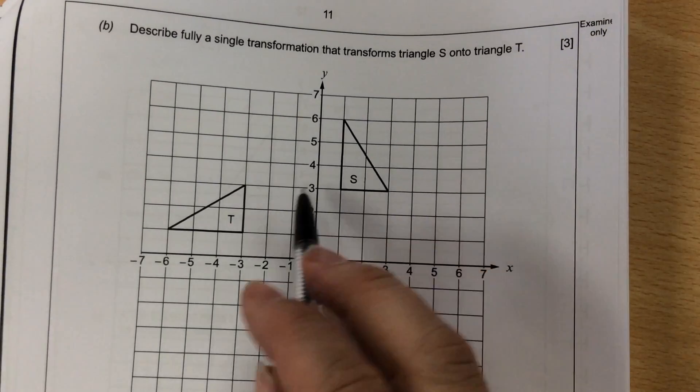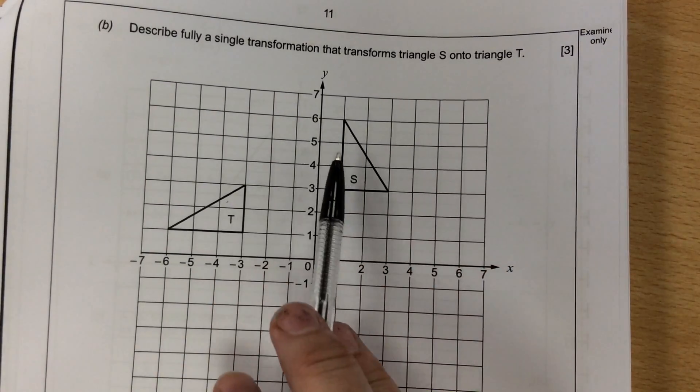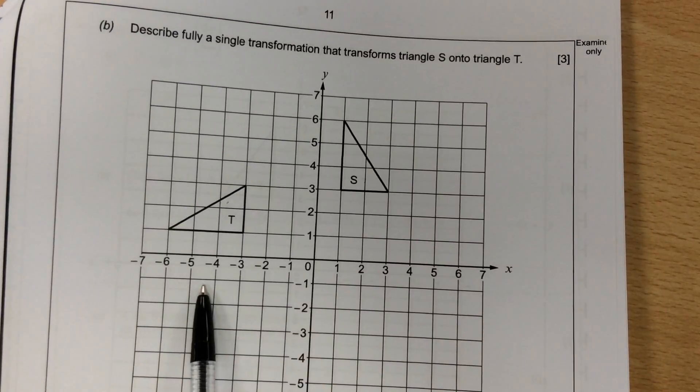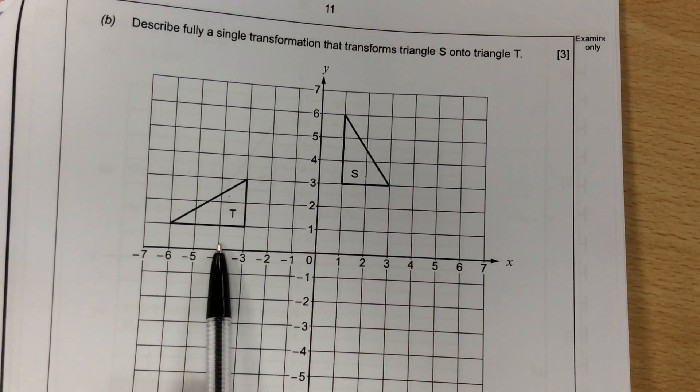Next question, how do I move S onto T? A translation means you move it across and up or down, and that's not in the same direction, so it's not a translation.